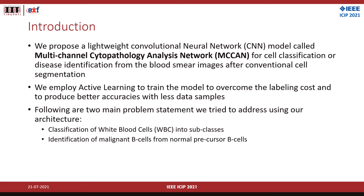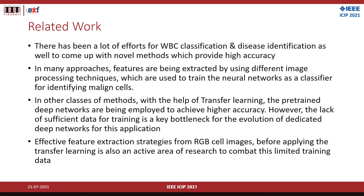The two main problem statements we try to address are: classification of WBCs into subclasses, and identification of malignant B cells from normal precursor B cells. There have been many approaches for cell identification and classification, starting from image processing techniques to state-of-the-art CNN deep learning models. In recent times, with the help of transfer learning, pre-trained models are able to achieve higher accuracies, but lack of sufficient labeled data is a key bottleneck. So we try to integrate and develop an architecture with the best features using image processing as inputs, followed by deep feature extractors with a classification layer.